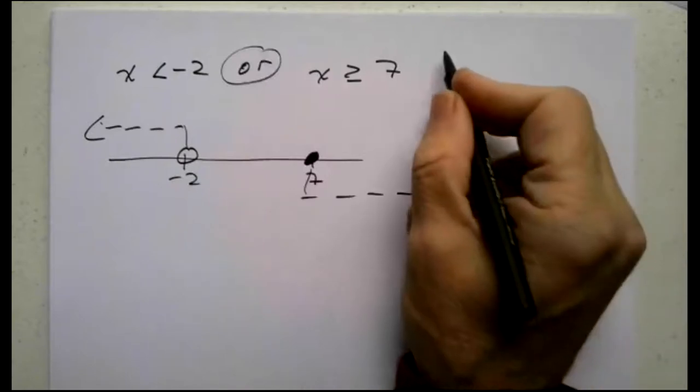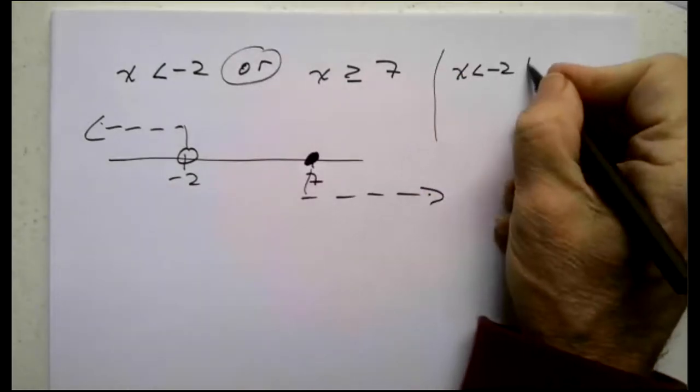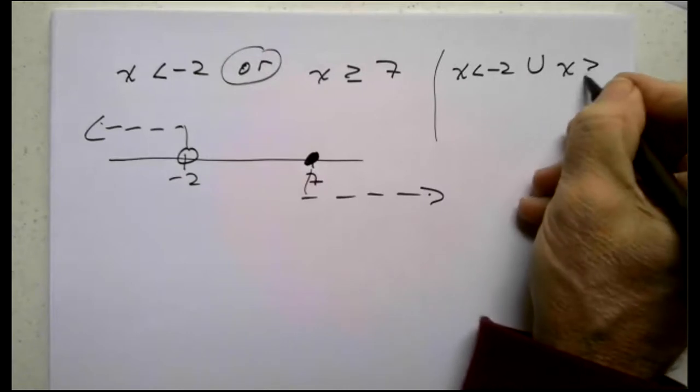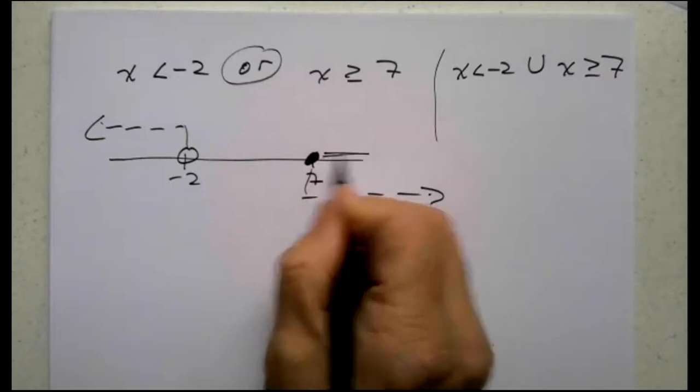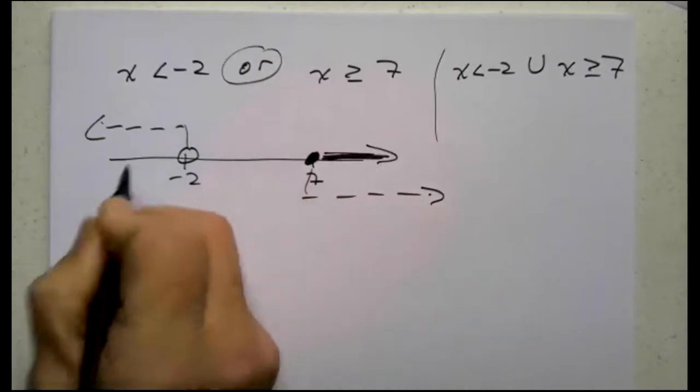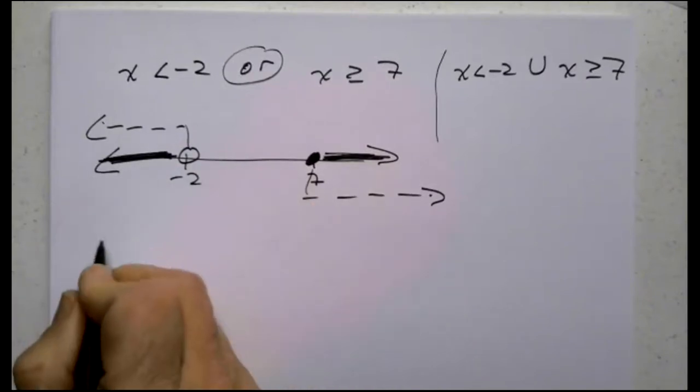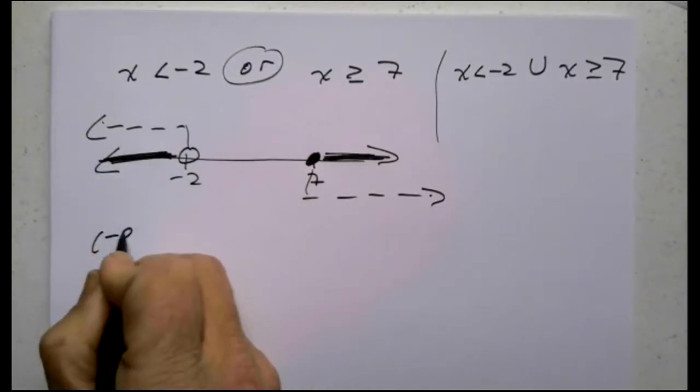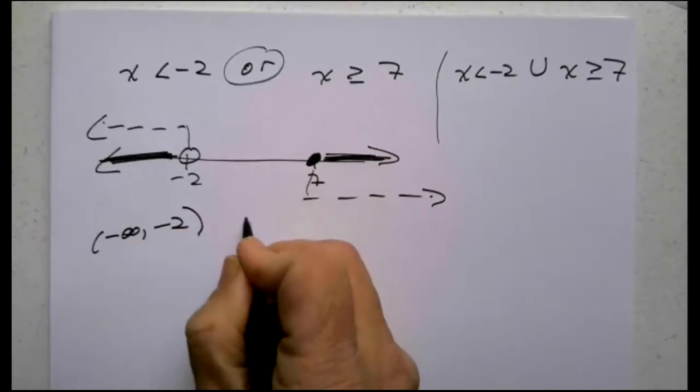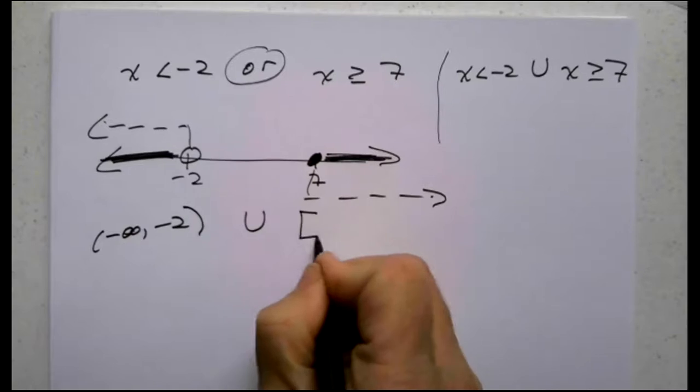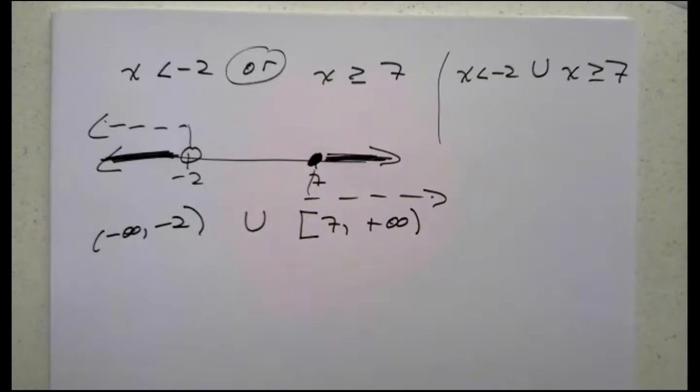Which would be the same thing as union. We could also say x is less than negative 2, union x greater equal to 7. Whereas one or the other or both are true here, here, which will give me left to right now, negative infinity, comma negative 2, round bracket because I don't include it, union together with the second piece, square bracket because 7 is included, comma plus infinity there.